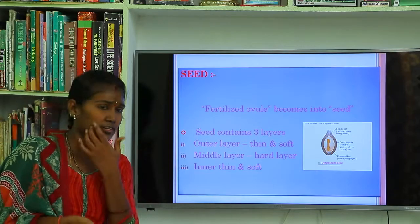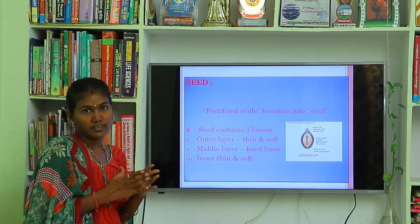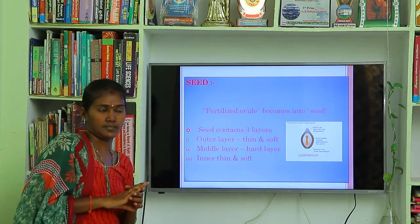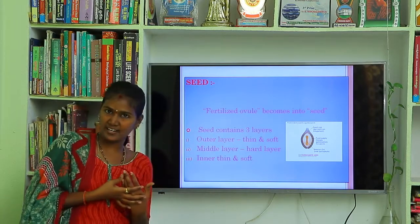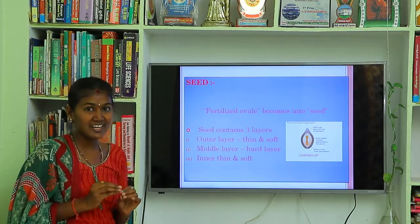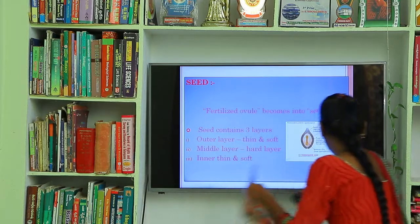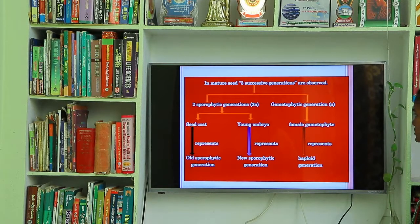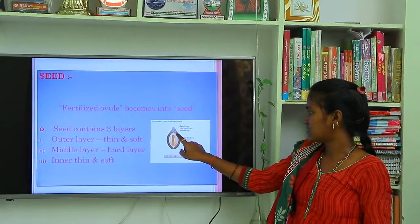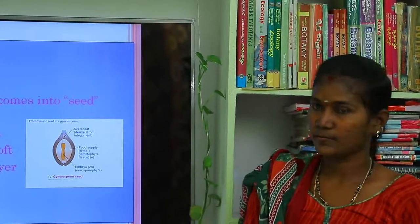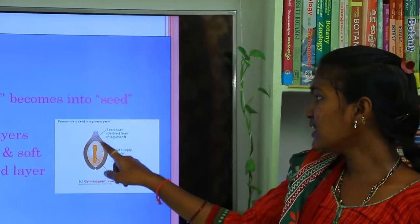After embryo formation, the fertilized ovule becomes into a seed. This seed in gymnosperms contains three layers: outer layer, middle layer, and inner layer. Both outer and inner layers are thin and soft. The middle layer is a hard layer. This is the seed structure in gymnosperms.